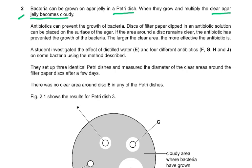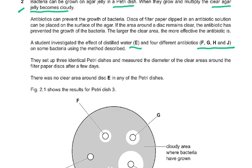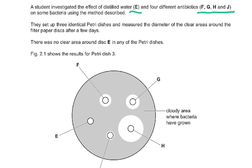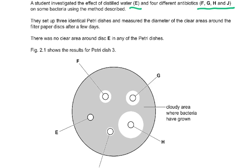The larger the clear area, the more effective the antibiotic is. A student investigated the effect of distilled water E and four different antibiotics F, G, H, and J on some bacteria using the method described. They set up three identical petri dishes and measured the diameter of the clear areas around the filter paper discs. After a few days, there was no clear area around disc E in any of the petri dishes.